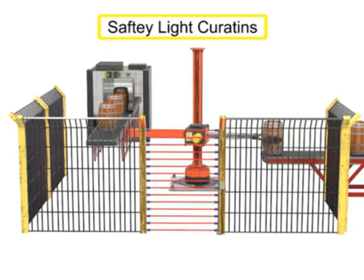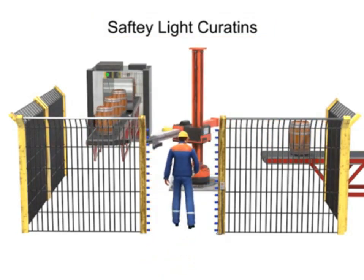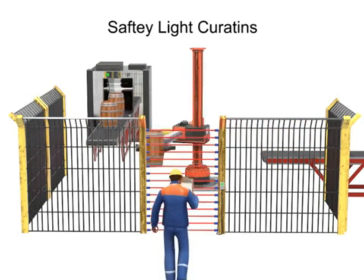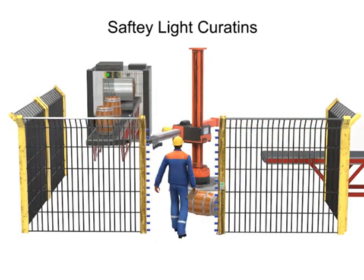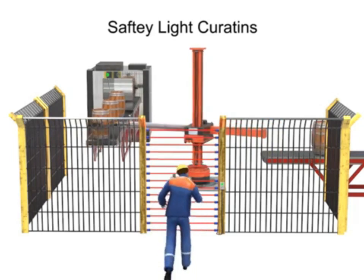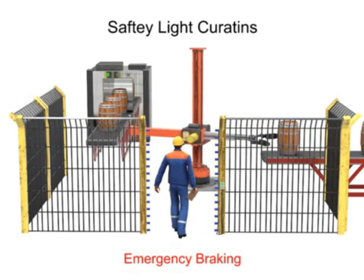Safety light curtains are another type of presence-sensing device. When a person enters the work envelope, the light beam is interrupted, which sends a signal to the robot. For certain work scenarios, sudden stops could cause the work to become uncontained — objects may continue to move even after the robot stops. In these cases, emergency braking of the robot is used in lieu of completely stopping. With emergency braking, the robot slows down work and does not stop suddenly.